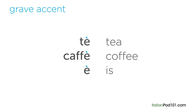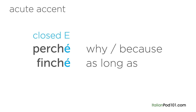If the vowel at the end is an E and it has the grave accent on top, it's indicating that we should pronounce it as an open E, and of course we must stress the syllable. The other accent is the acute accent, and it's used to indicate that we should pronounce it as a closed E. The acute accent can only appear over the vowel E, and only when it's at the end of a word.